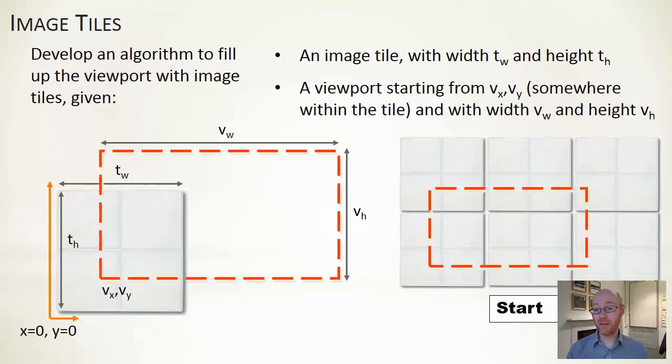So we're having a bit of a ponder as to how you think you would do this. Particularly if you wanted to create an algorithm, we have a viewport with vw and vh for its width and height, and its start location would be vx, vy. We're assuming here is the bottom left-hand corner, but it's a matter of choice.